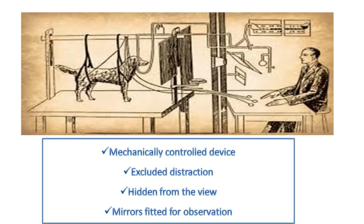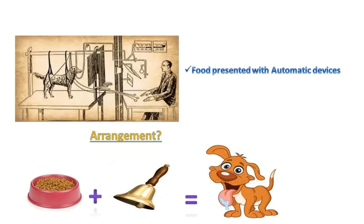A set of mirrors was fitted so the observer could still watch the experiment while remaining hidden. An arrangement was made so that food would be given to the dog through automatic devices. According to this arrangement, every time food was presented before the dog it was accompanied by a ringing bell — meaning when the food was given, a bell was rung. When the food was placed before the dog and the bell was rung, automatic secretion of saliva from the dog's mouth was observed.